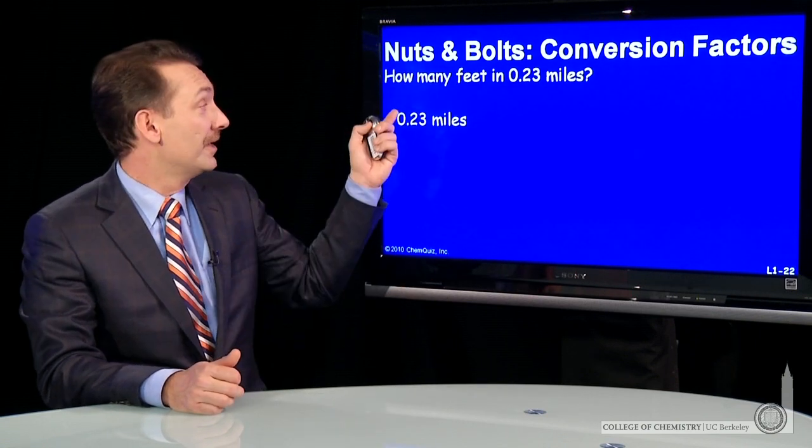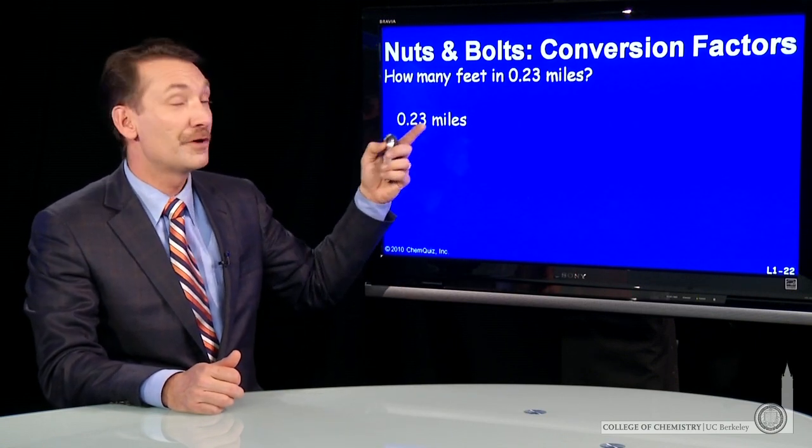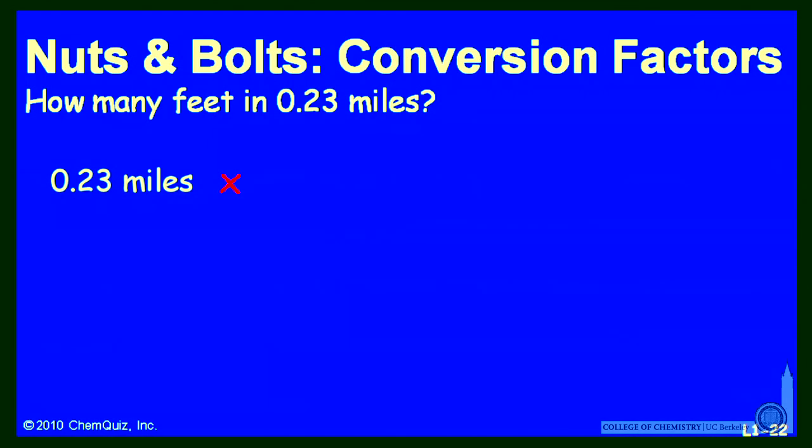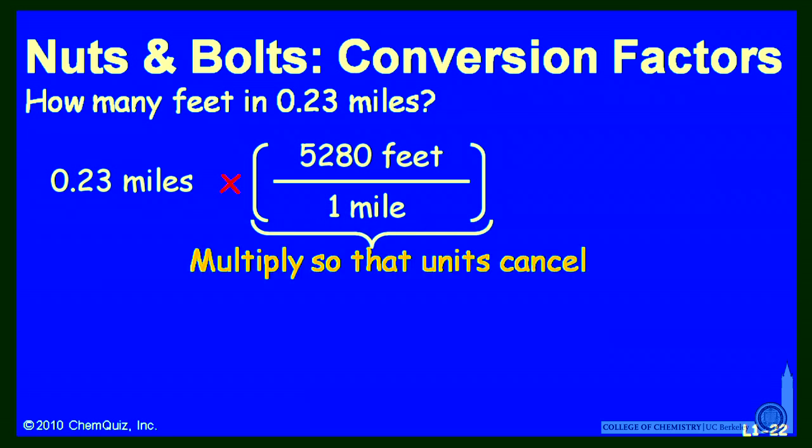So let's try that. Here's 0.23 miles. How many feet is that? Well, I can multiply by 5,280 feet over a mile, and I use my conversion factor. I arrange it so the units cancel. So I choose to have the feet on the top and the miles on the bottom, so the miles unit cancels and leaves me just the product of 0.23 and 5,280 feet, which is 1,214.4 feet.